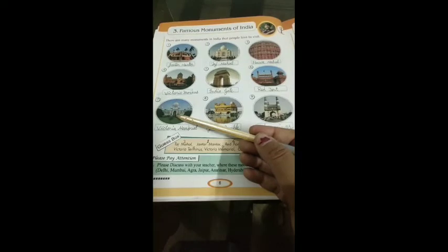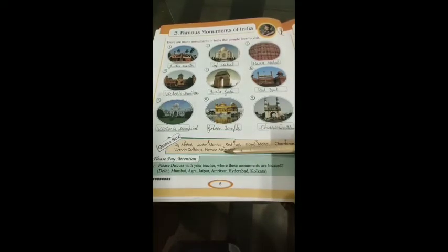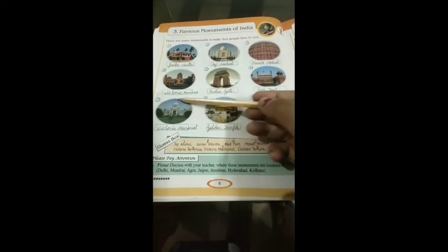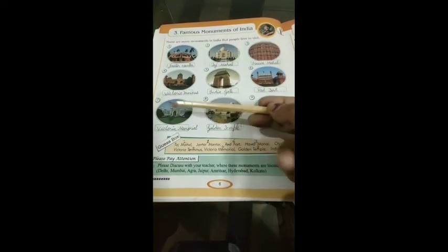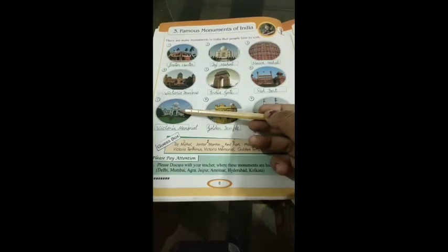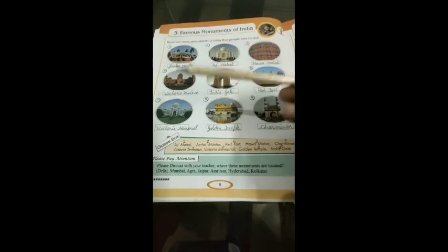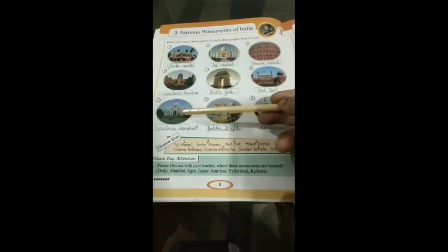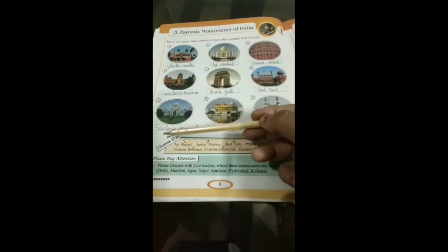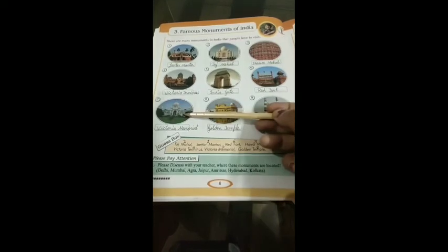Look at the seventh picture. This is Victoria Memorial. It is also made up of white marble — yah structure bhi white marble se bani hui hai. And it is situated in Kolkata. Yah Kolkata mein hai. Aur yah Empress Victoria ki yaad mein banaya gaya tha, isliye iska naam Victoria Memorial rakha gaya.